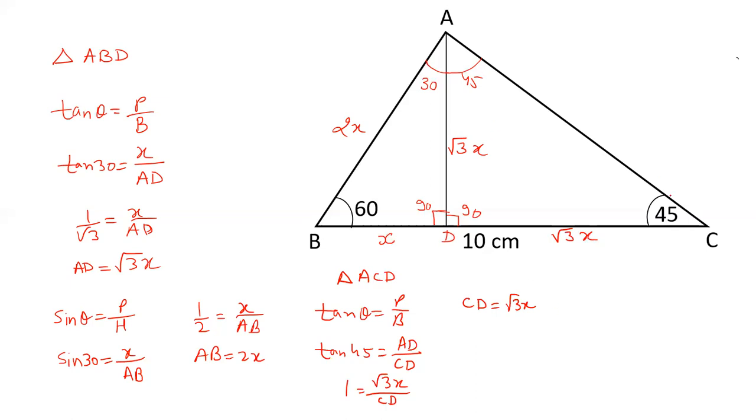Using sin theta equals P over H: sin 45 equals AD over AC, which is root 3x over AC. Since sin 45 equals 1 over root 2, AC length is root 2 times root 3x, which equals root 6x.